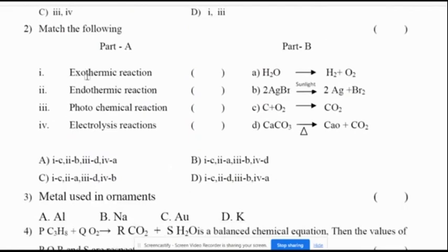Match the following reaction types: exothermic reaction, endothermic reaction, photochemical reaction, electrolysis reaction. The correct option is D. Exothermic: C + O2 gives CO2. Endothermic: CaCO3 gives CaO + CO2. Photochemical: 2AgBr gives 2Ag + Br2. Electrolysis: water is split into hydrogen and oxygen.